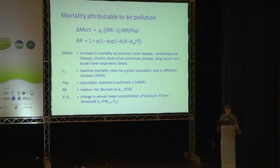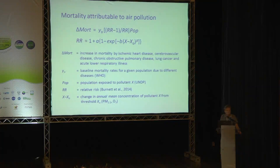We use a function called RR — relative risk. We use different datasets, for example population data from the UNDP population division. This RR is calculated based on a revised function, because in some areas of the world air pollution is so high that the previous functions — based on studies in the United States and Europe — were no longer representative for the very high air pollution found nowadays in parts of Asia.